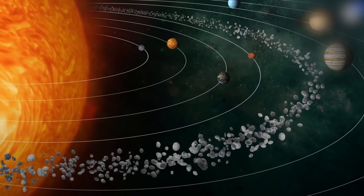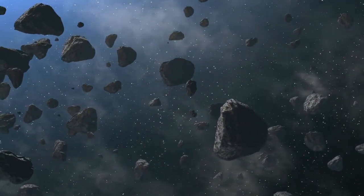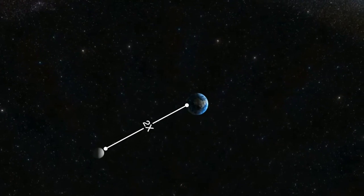The belt between the orbits of Mars and Jupiter contains millions of asteroids, but the average distance between these asteroids is more than 600,000 miles, more than twice the distance between the Earth and the Moon.